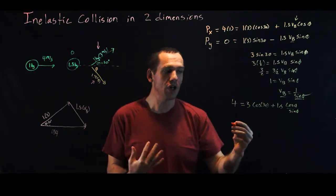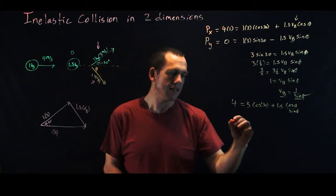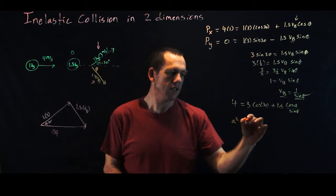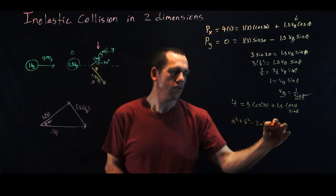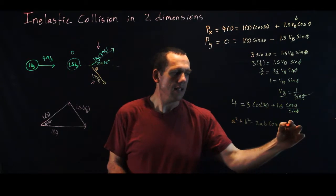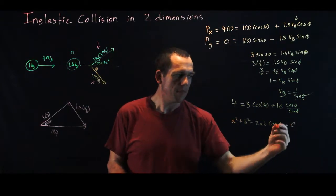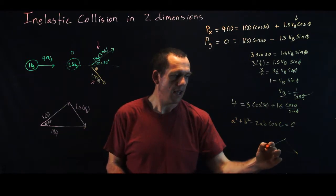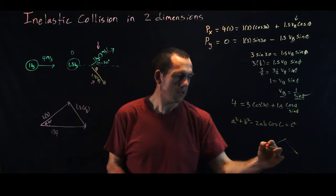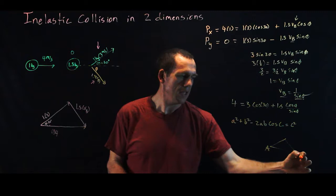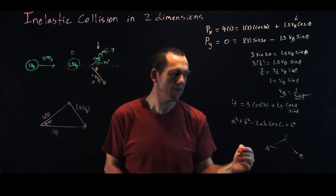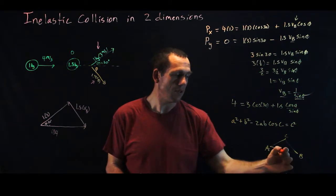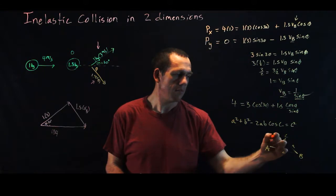And so the law of cosines, the version of it that I memorized, says a squared plus b squared minus 2ab cosine c equals c squared, where this is the triangle, any triangle, a, b, c, so capital letters on my vertices, and the sides opposite those are their lowercase letters a, b, and c, right?